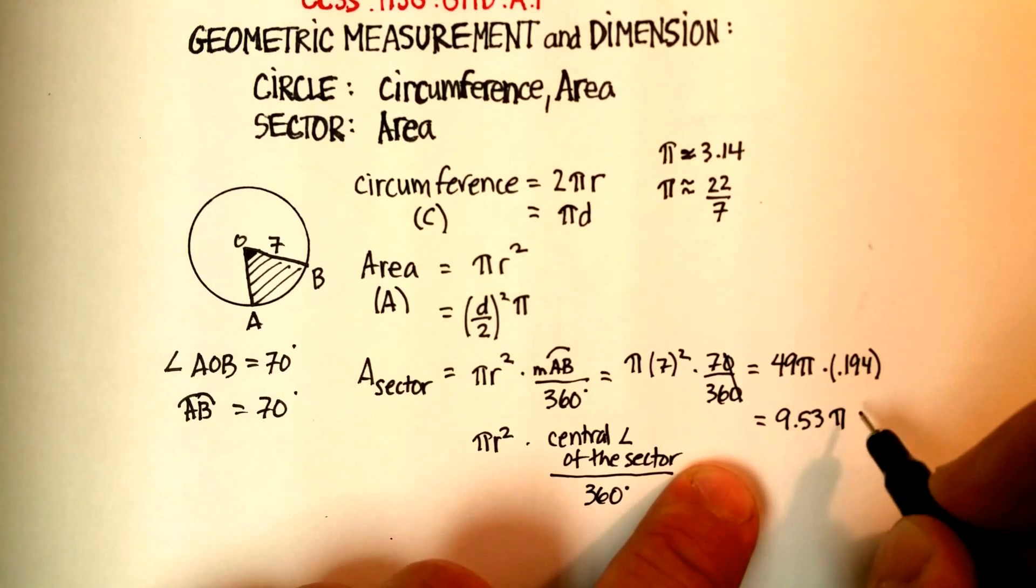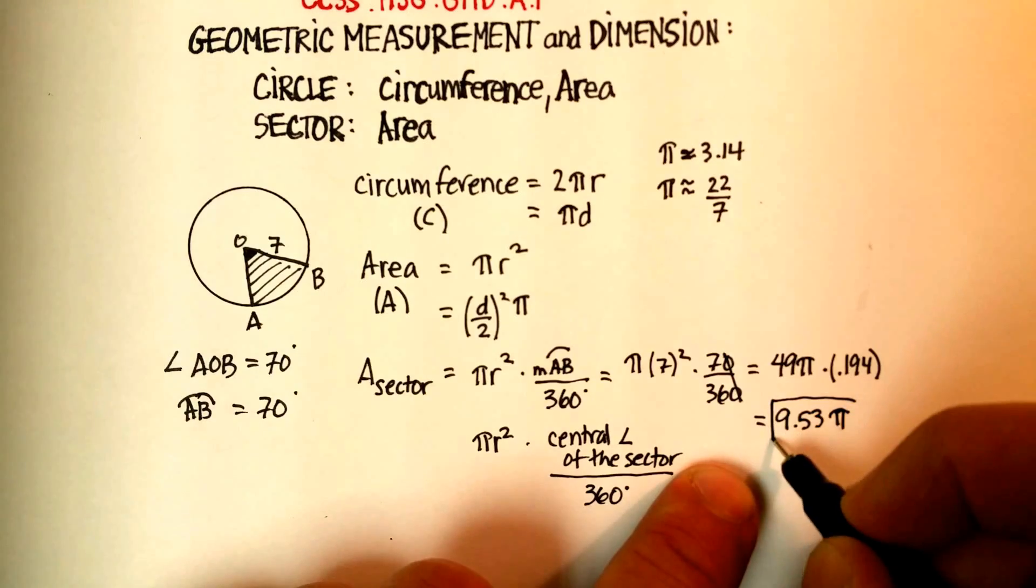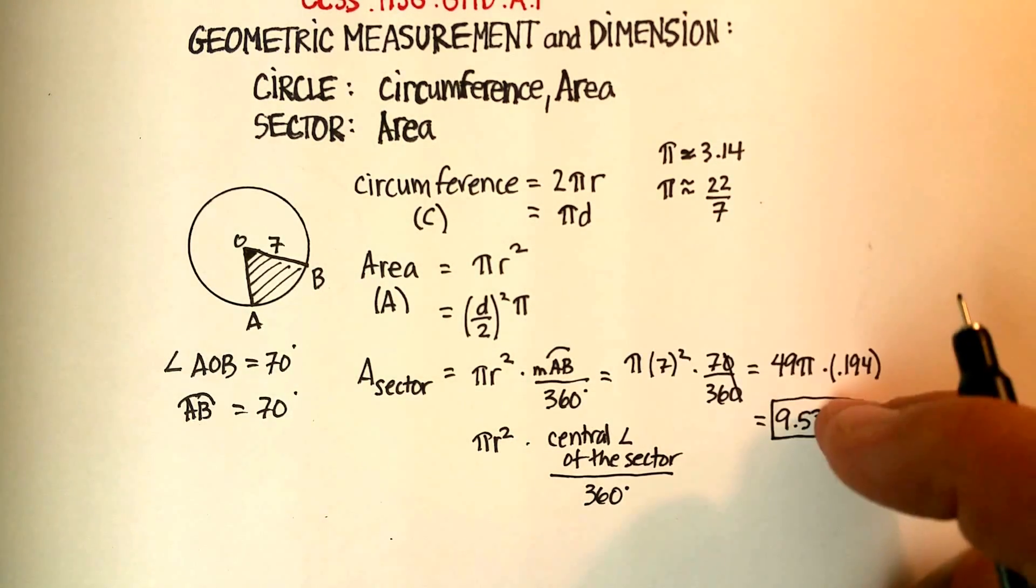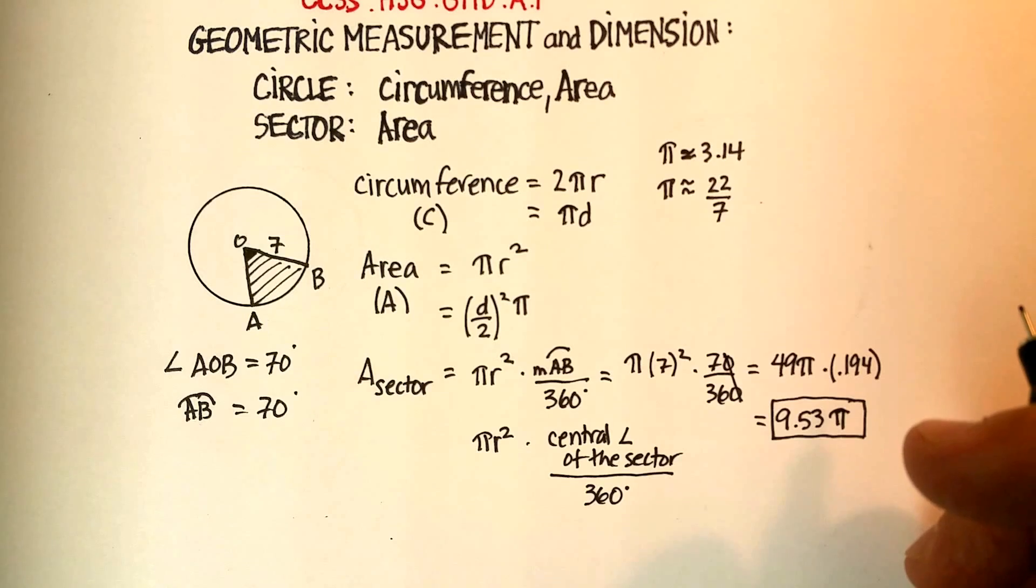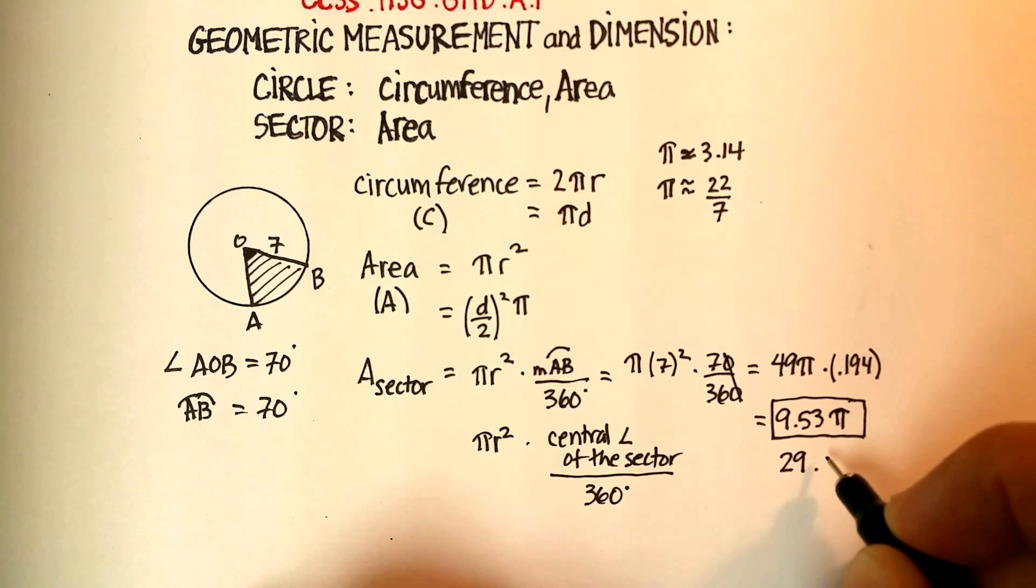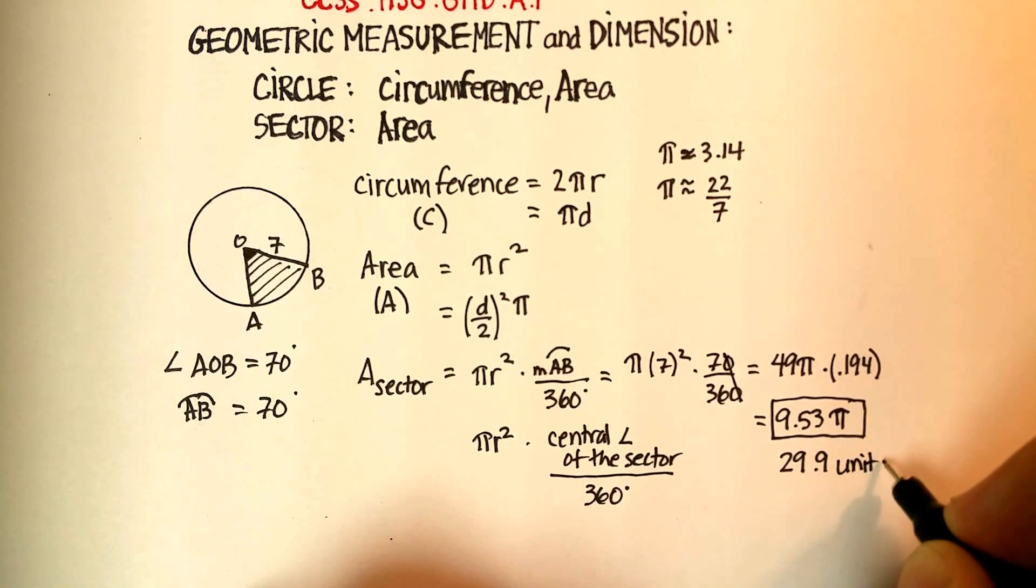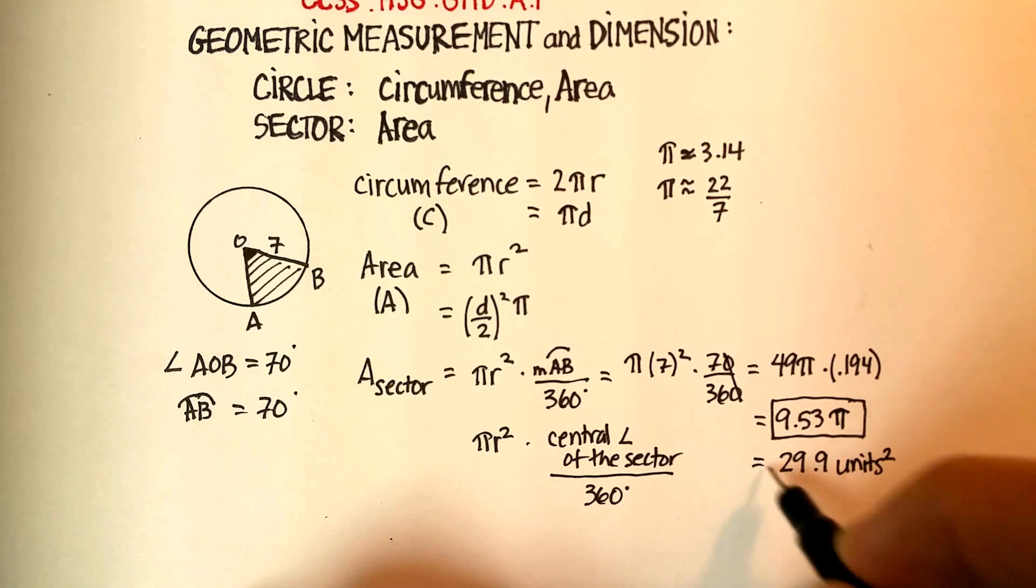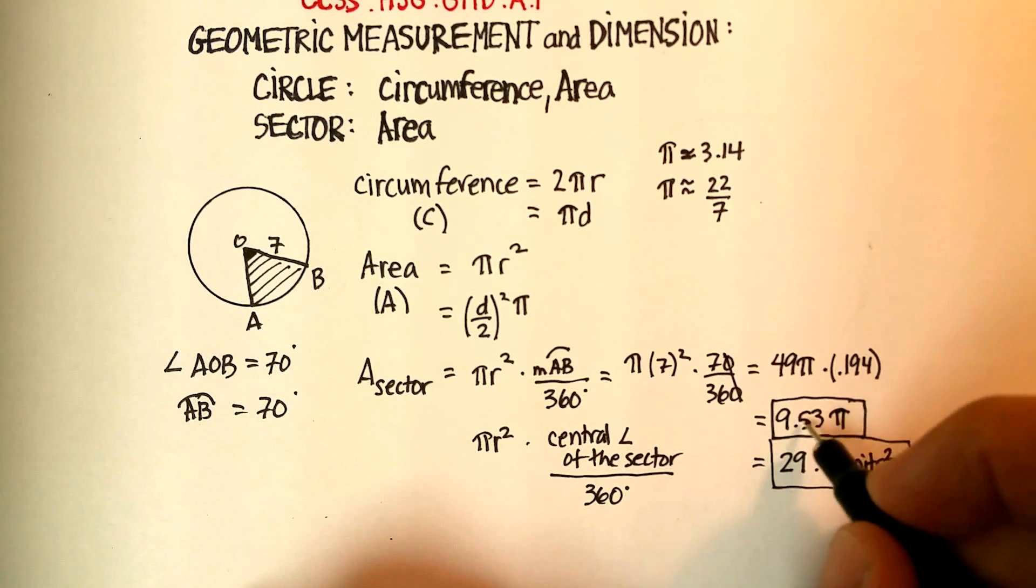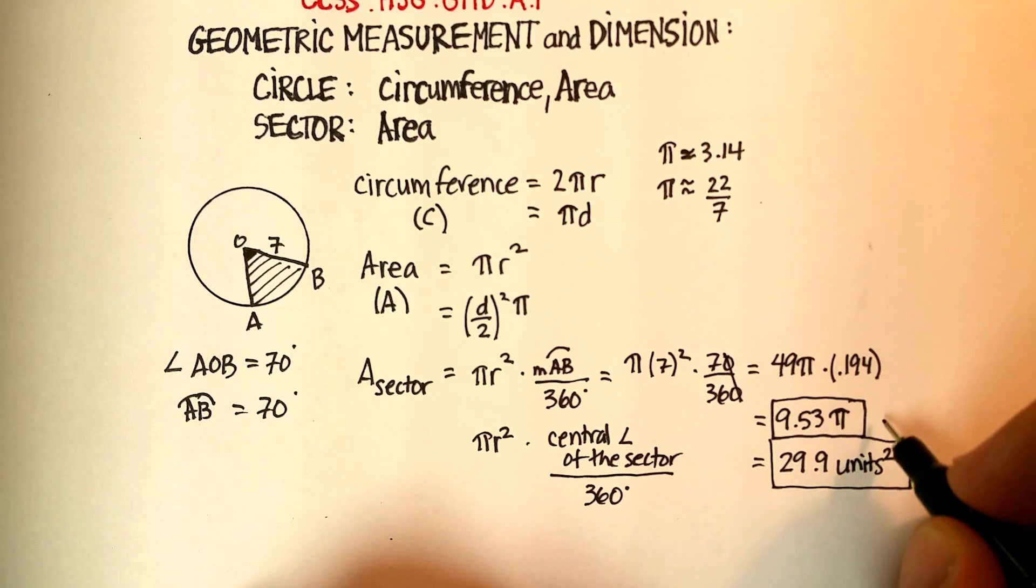Now some teachers accept this as an answer with pi just being the units. If you multiplied it by 3.14, that would be 29.9 units squared. And this also by the way would be in squared units.